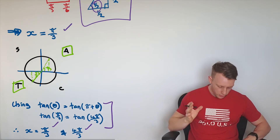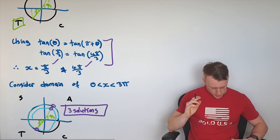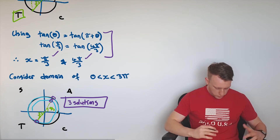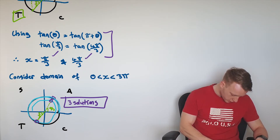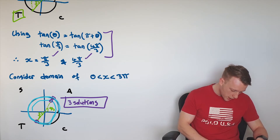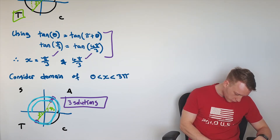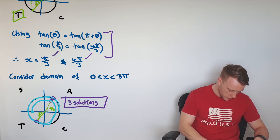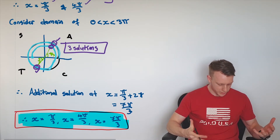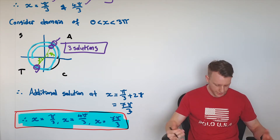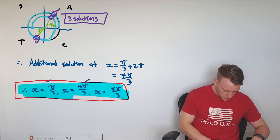Then we need to consider the domain. The domain was between 0 and 3π. I've copied the same unit circle and in blue I've gone around once to 2π, then continuing to 3π ending there. We can see three solutions — one there, one there from within one rotation, and this additional solution which is π/3 plus 2π, just an additional rotation. You get three solutions, all lying within the domain.